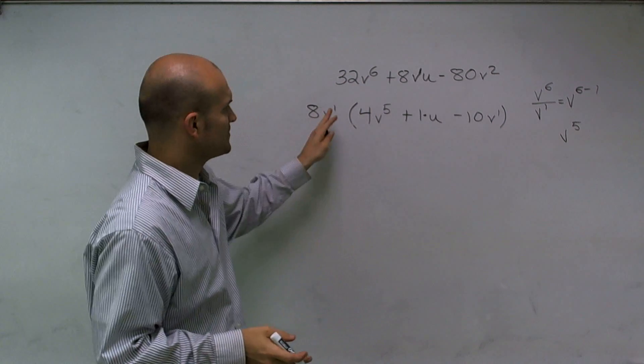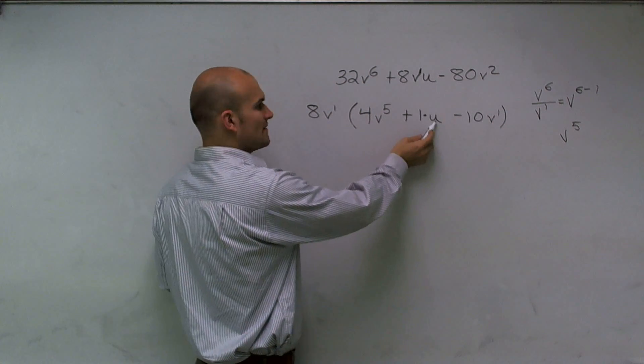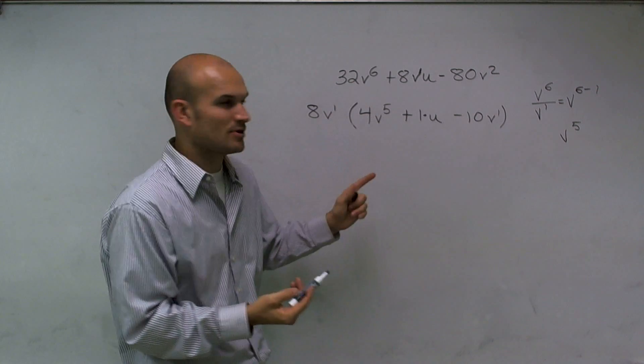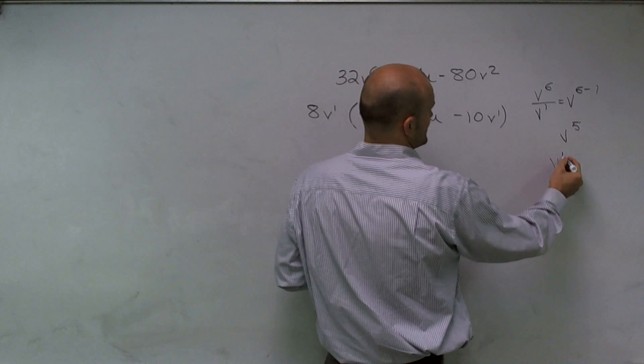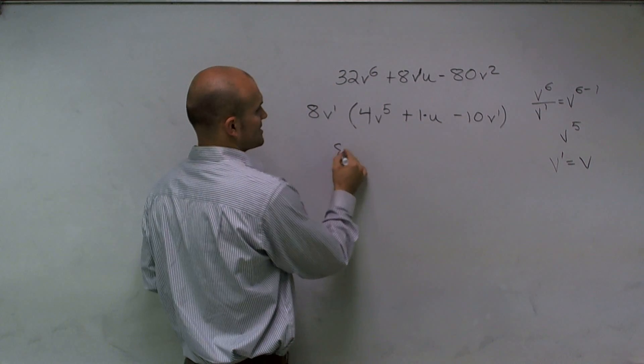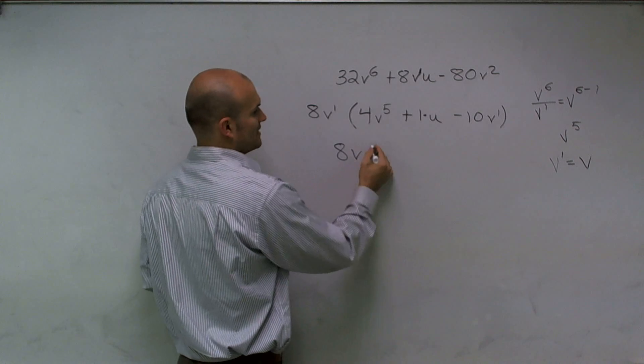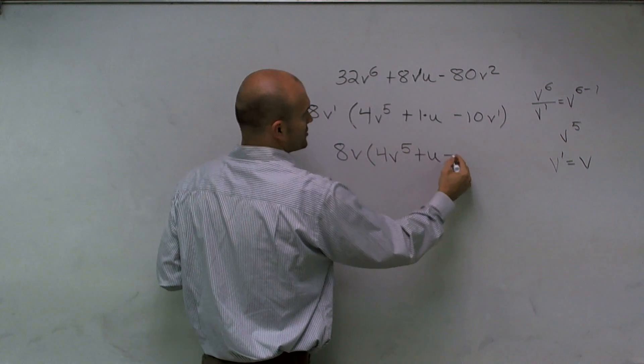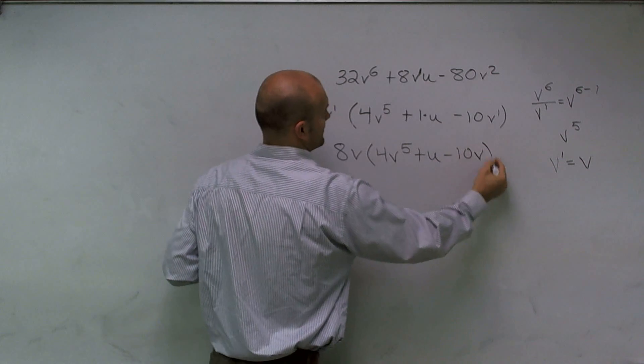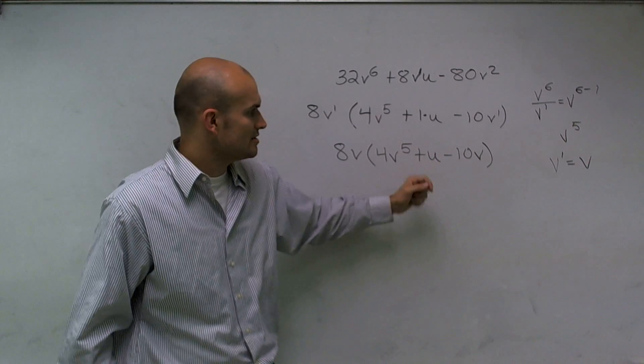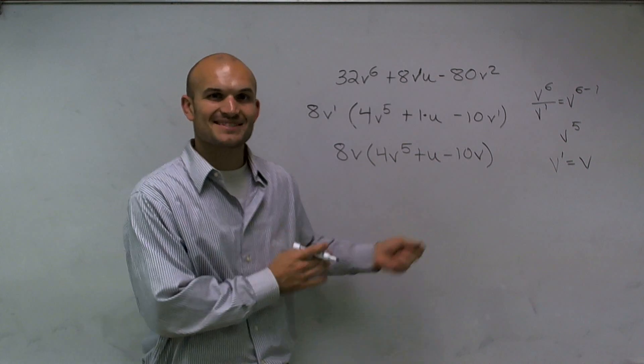Then what I'll do is I'll just kind of reduce this. We usually don't write our 1 in front of a variable, nor to really write a 1 in front of an x, or a 1 as our exponent, because v to the first power we know just equals v. So let's just write this in a more simplified version. So I have 8v times 4v to the fifth plus u minus 10v. I look at my answer. I notice I cannot combine any of those like terms. And that is simply factored. Thanks.